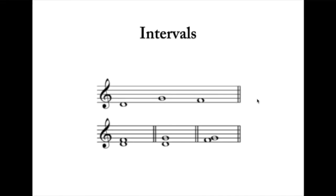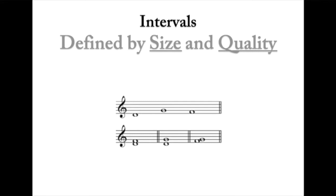Today we're going to be talking about intervals - how to construct them and how to identify them. Intervals are the distance between two different notes. We can talk about melodic intervals as they occur in time in a melody, like from D up to G or G to F. We can also talk about harmonic intervals that occur simultaneously, such as from D up to F or D up to G.